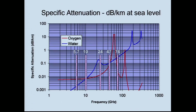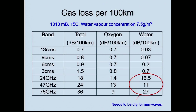Just to really highlight that point again — bands like 47 gigahertz are an issue because of oxygen loss. But the bands up to 24 gigahertz, the oxygen loss is pretty small. The water vapor loss in dB per 100 kilometres is variable and goes up and down.